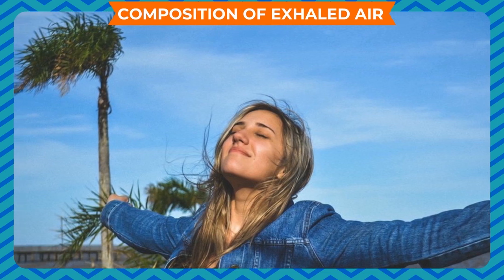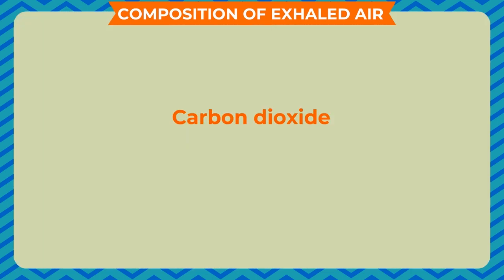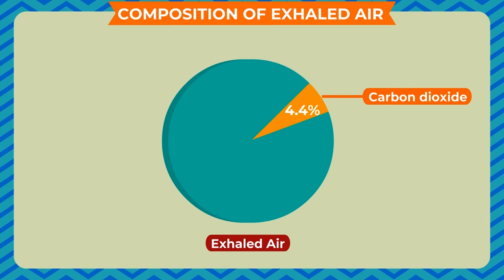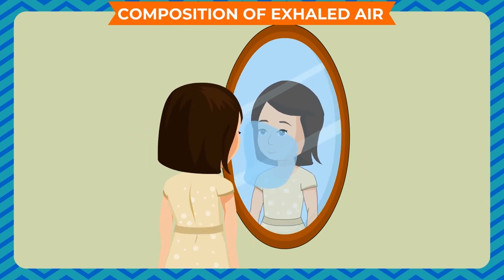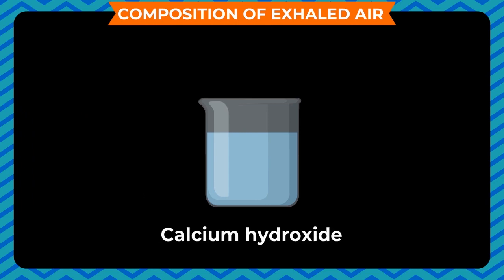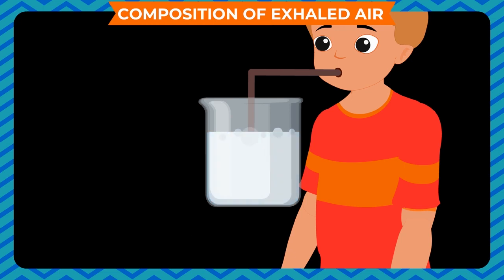Composition of exhaled air: The air we breathe out contains carbon dioxide and water vapour. The inhaled air contains only 0.04% carbon dioxide while exhaled air contains 4.4% carbon dioxide. To confirm this, stand in front of a mirror and exhale — the glass becomes misty, showing water vapour in exhaled air. Take some lime water (calcium hydroxide) in a glass and blow air into it through a straw. The lime water turns milky as calcium hydroxide combines with carbon dioxide to form calcium carbonate, confirming that exhaled air contains carbon dioxide.